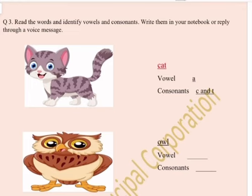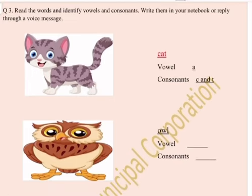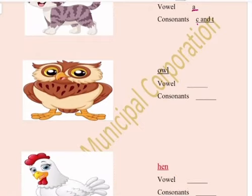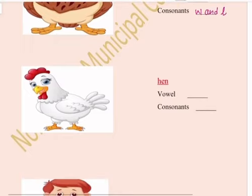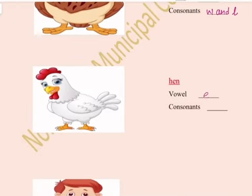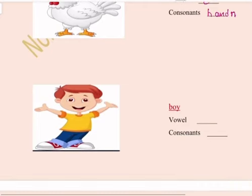Question number 3: Read the words and identify vowels and consonants. Write them in your notebook or reply through a voice message. For example, cat — C-A-T. Vowel: A. Consonants: C and T. Hand — vowel is E, and the consonants are H and N. Boy — vowel is O, and the consonants are B and Y.